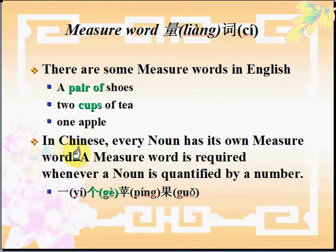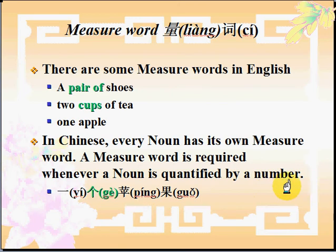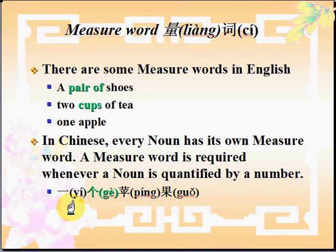But in Chinese, every noun has its own measure word. A measure word is required whenever a noun is quantified by a number. So if we want to say 'one apple' in Chinese, it will be 一个苹果. Here, 一 means 'one', and 苹果 means 'apple'.